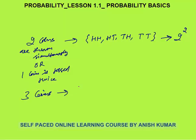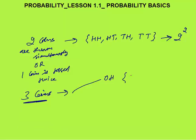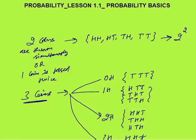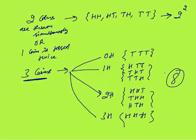Two coins give 2² = 4 total possible outcomes. When three coins are thrown (or one coin tossed thrice), listing by number of heads: zero heads (TTT), one head (HTT, THT, TTH), two heads (HHT, THH, HTH), and three heads (HHH) — that gives 8 total cases.